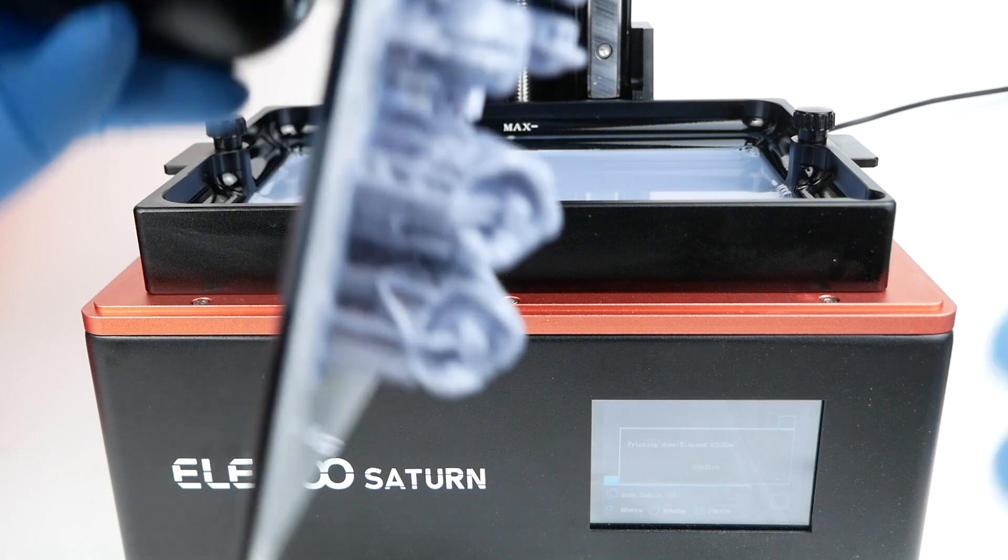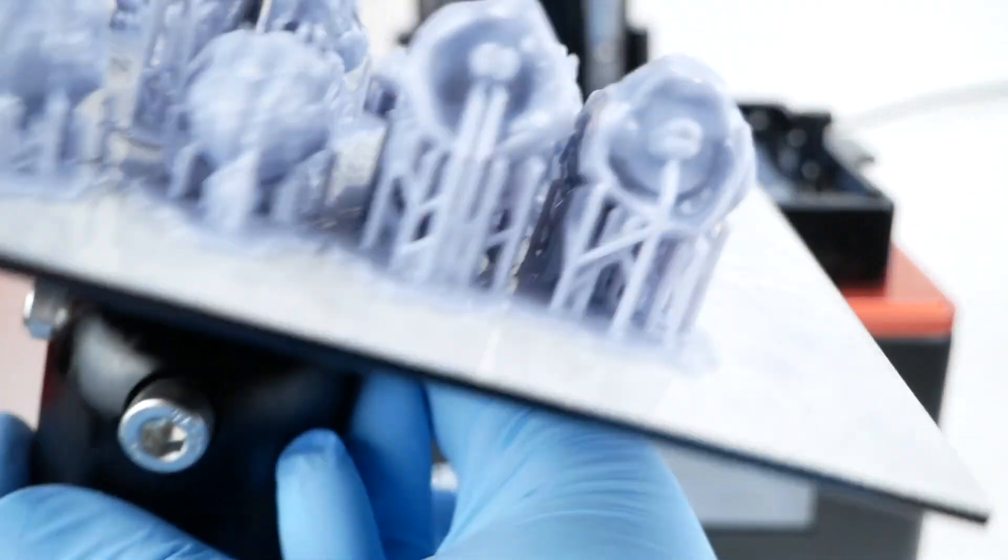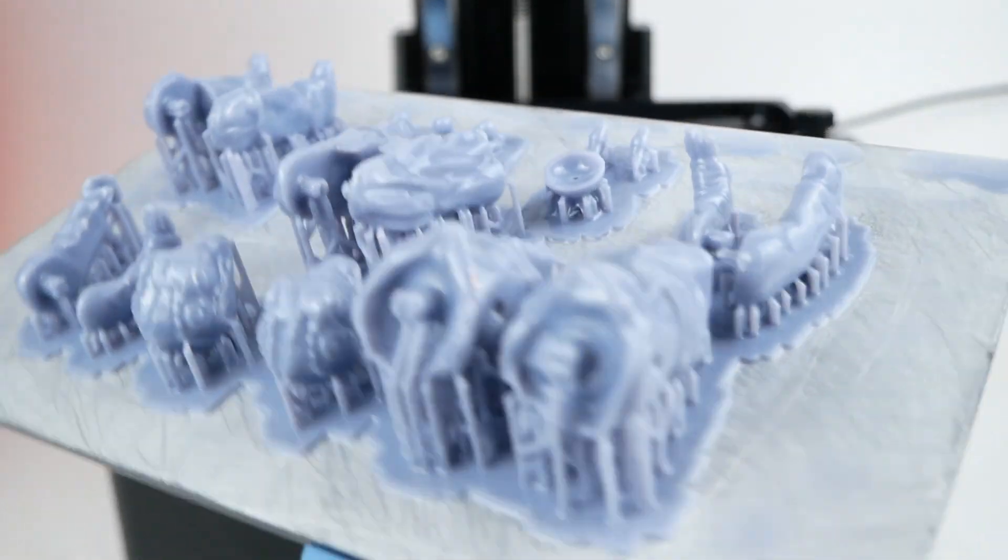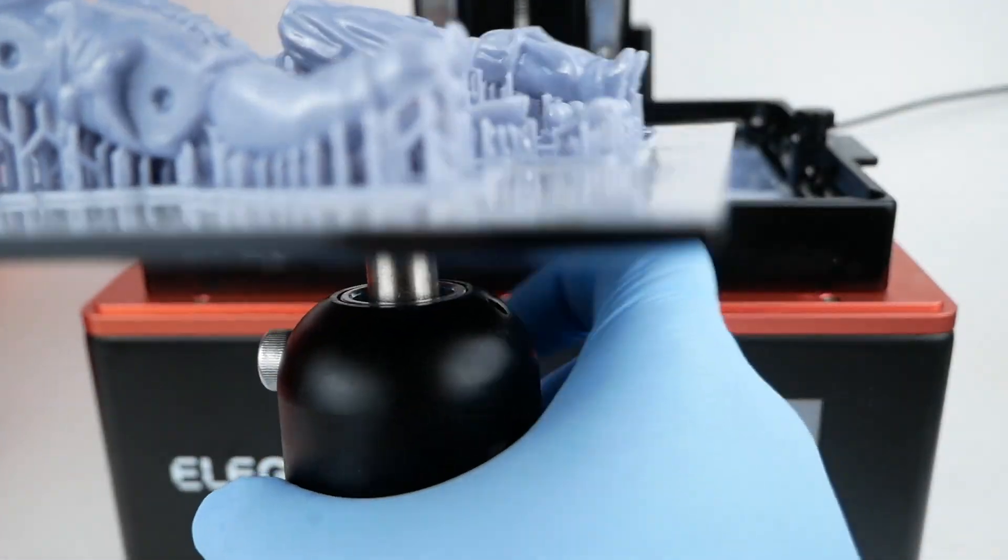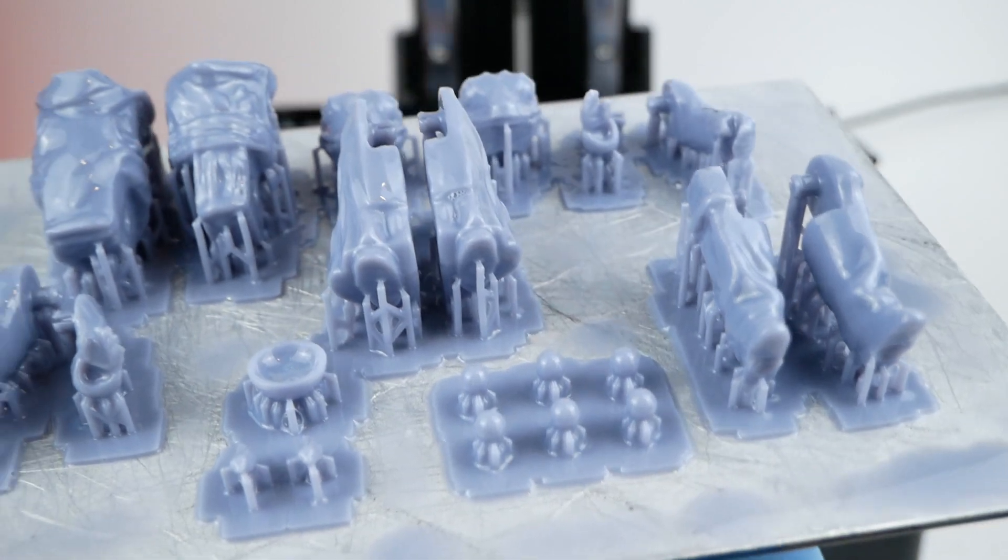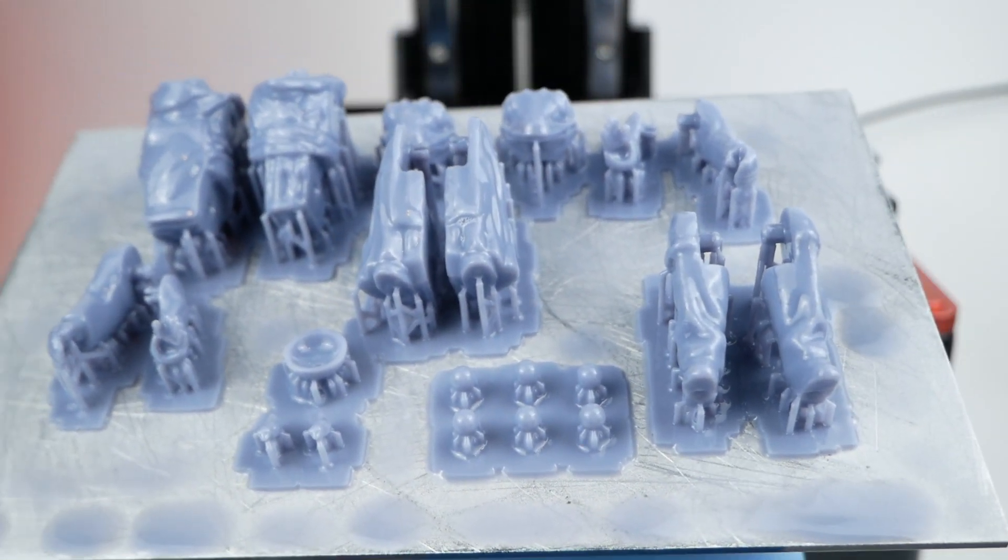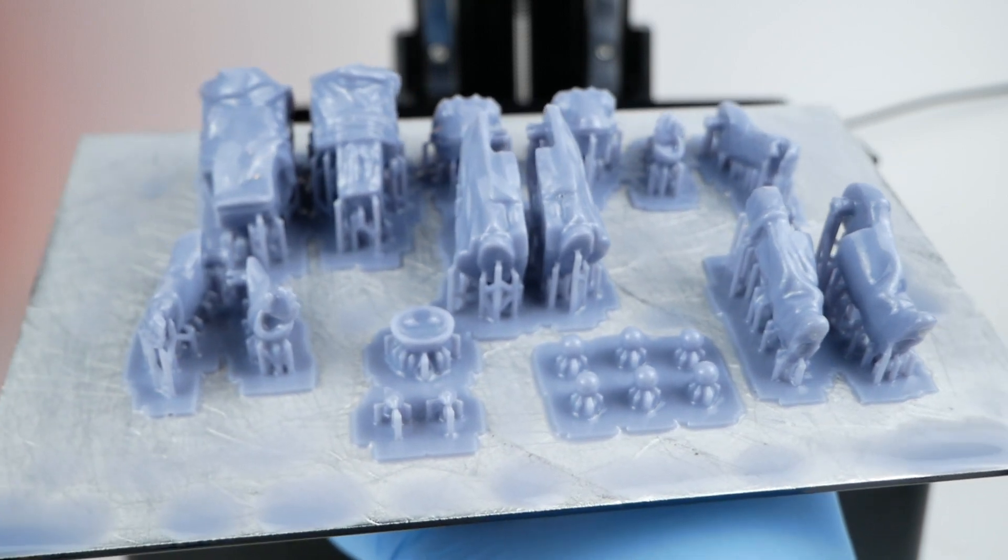You can also, of course, use the Saturn to print lots of smaller things at once. I do this less often because my smaller printers can do this more or less as well, just not as many items. But if you're a war gamer or you like to print miniatures, this can be really useful, and you can print up a lot of things in a short amount of time.